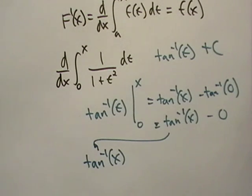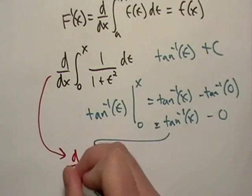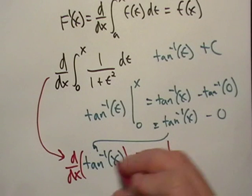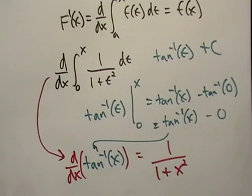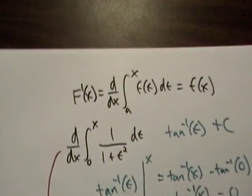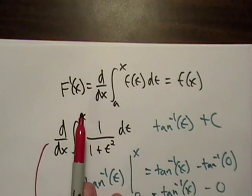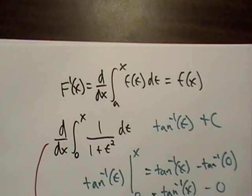But in the beginning of the problem, it says we have to take the derivative of that result. So what is the derivative of inverse tangent of x? It's just one over one plus x squared. Notice that all we did was take the upper limit of integration and stick it in — that's kind of a safe pattern to observe.